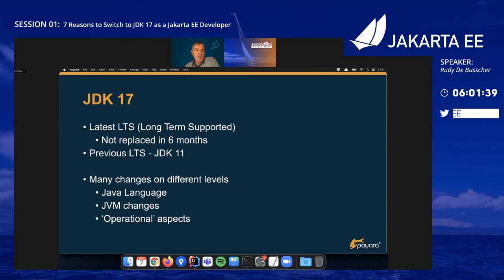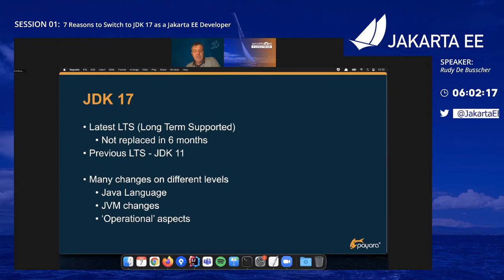JDK 17 is the latest LTS — long-term supported — version. That means it's not replaced in six months and you don't need to switch to JDK 18 after a short period. That's ideal for enterprise environments because there is a regular release of bug and security fixes on JDK 17. Vendors will support it around seven years, so you can use the same JDK version with the same features without needing to change or adapt your application. The previous LTS was JDK 11, three years ago, and the next one will be JDK 21, in two years.